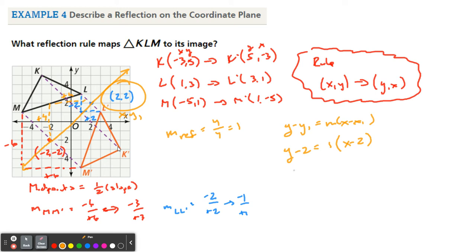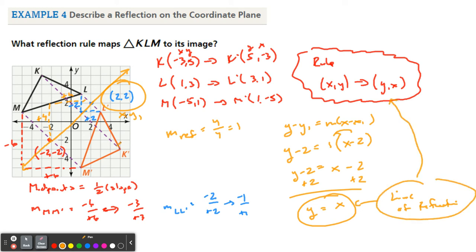I'm going to put this in slope intercept form. y minus 2 equals, we're going to distribute the 1. 1 times x is x. 1 times negative 2 is negative 2. And then to get y by itself, we're going to add 2 to both sides. The 2s cancel. y comes down. The x comes down. And the 2s cancel. There is your line of reflection.